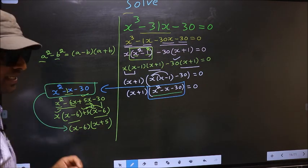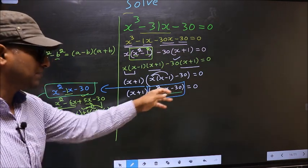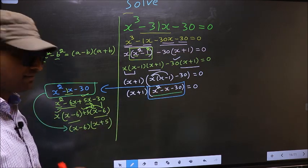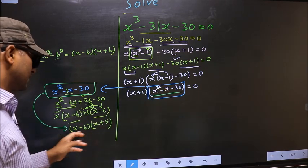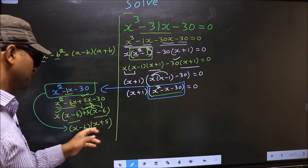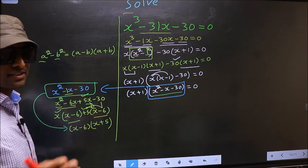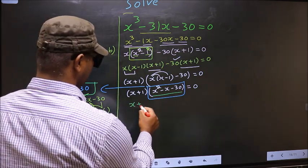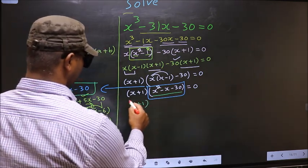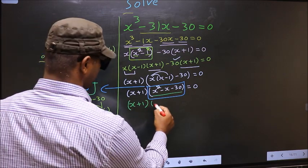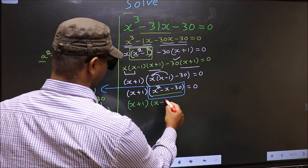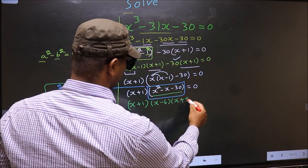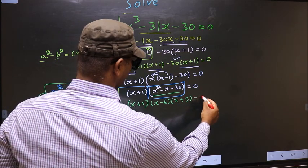In place of this quadratic now I will replace this factored form. So this equation changes to x plus 1 times x minus 6 times x plus 5 equal to 0.